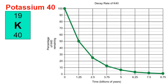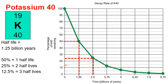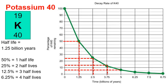One such isotope is potassium-40, which has a much longer half-life of 1.25 billion years. Its decay graph looks similar in shape to the carbon graph, but the timeline is in billions of years. If a sample has 50% of its potassium-40 remaining, one half-life has passed — about 1.25 billion years old. At 25%, two half-lives — about 2.5 billion years. At 12.5%, three half-lives — about 3.75 billion years. At 6.25%, four half-lives — about 5 billion years old.